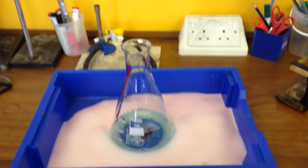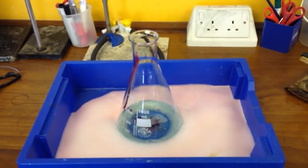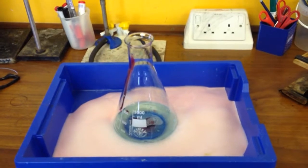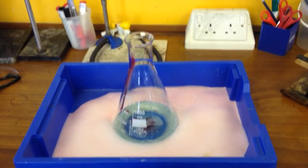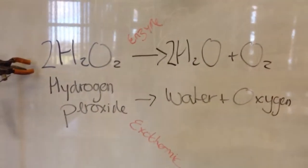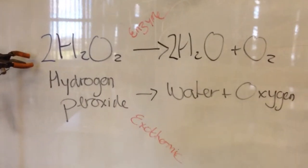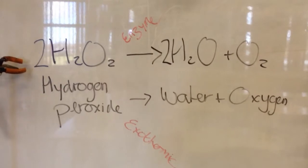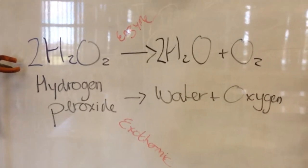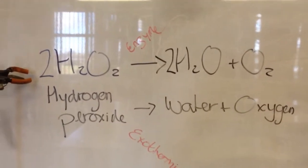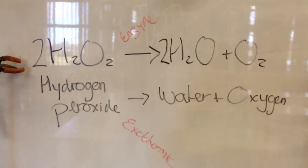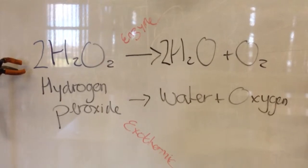Hello and welcome to the video, which is another special request for my Year 9 class. We're going to be doing an elephant's toothpaste, which is actually the reaction between hydrogen peroxide, which turns into water and oxygen. This is an enzyme-catalyzed reaction and is exothermic.